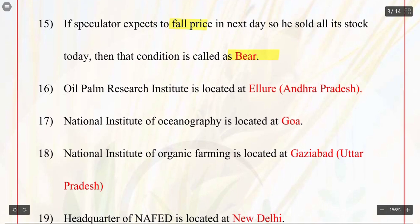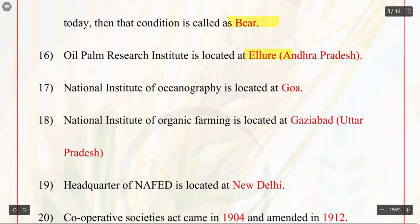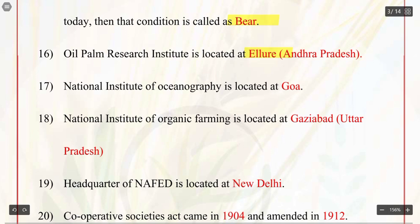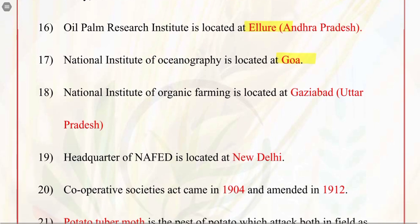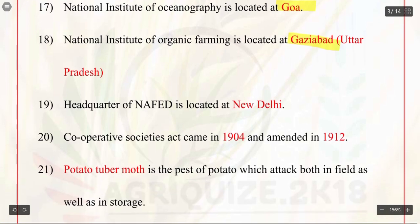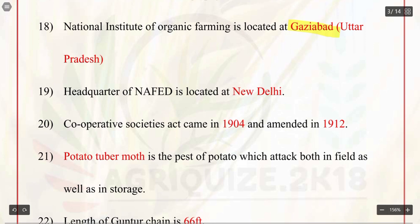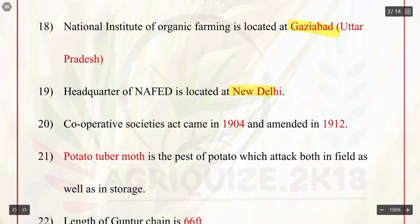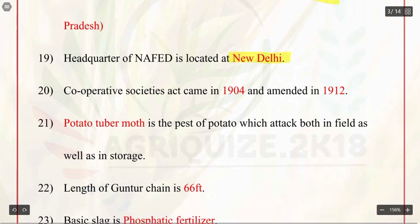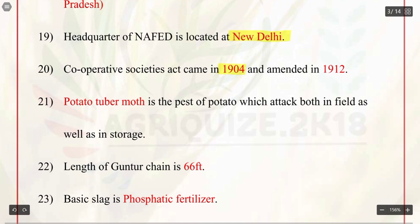Q16. Oil palm research institute is located at Eluru, Andhra Pradesh. Q17. National Institute of Oceanography is located at Goa. Q18. National Institute of Organic Farming is located at Ghaziabad, Uttar Pradesh. Q19. Headquarter of NAFED, i.e. National Agricultural Cooperative Marketing Federation of India, is located at New Delhi. Q20. Cooperative Societies Act came in 1904 and was amended in 1912.